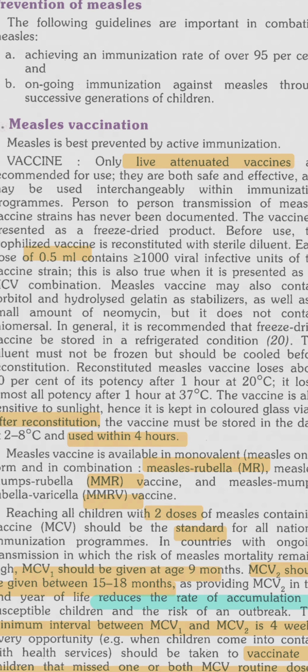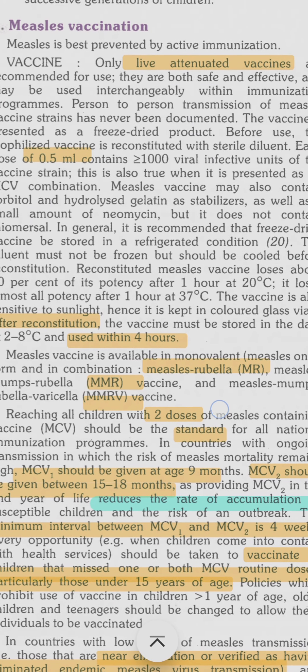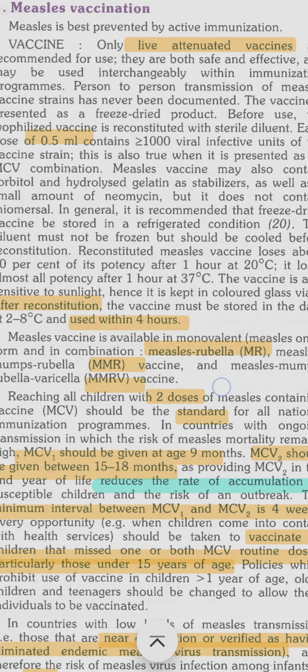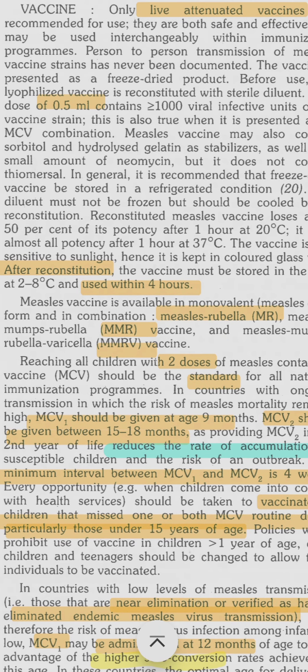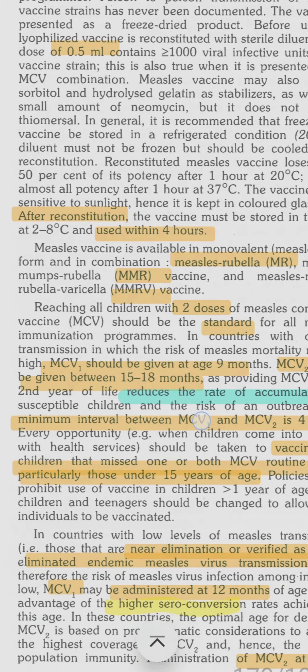The vaccine can be monovalent or in combination — MR, MMR, or MMRV. The first dose is given at nine months and the second dose at 16 to 24 months.